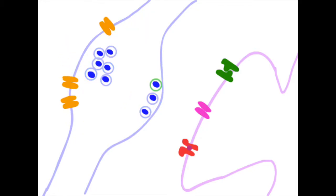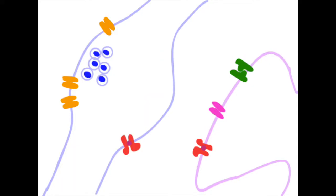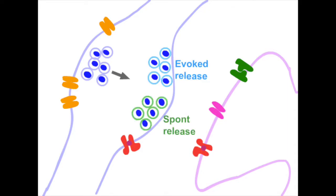However, neurotransmitter can also be released spontaneously in the absence of an action potential in small quantized amounts. There's growing evidence showing that action potential evoked release and spontaneous release are regulated separately from one another, but precisely how is still unclear.